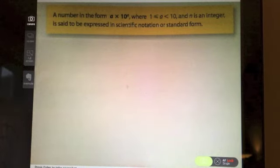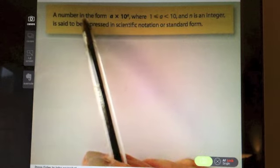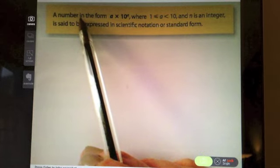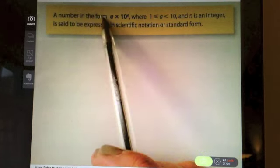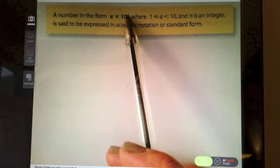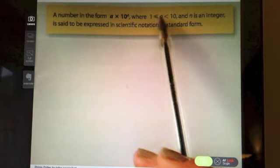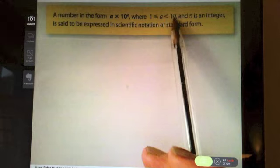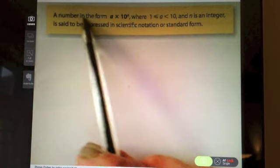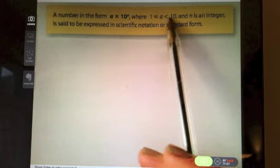So, I want to explain to you about standard form. Often in a question in the paper, it'll ask you to give the answer in the form a times 10 to the power of n, where 1 is less than or equal to a, which is less than 10. That's exactly how they'll write it. That piece of information right there is exactly how they may ask for it in the exam.